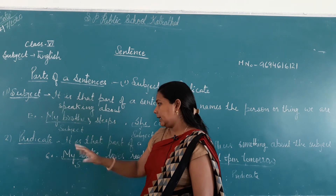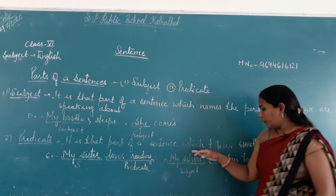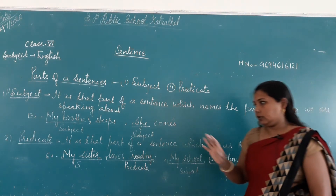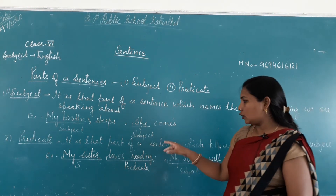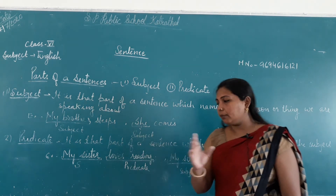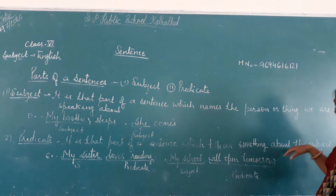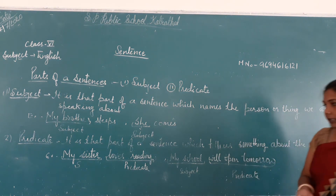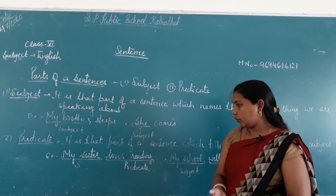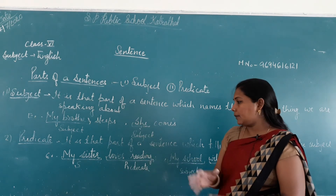Next part is predicate. What is predicate? It is that part of a sentence which tells us something about the subject. It is called predicate. It is that part of a sentence which tells us something about the subject.